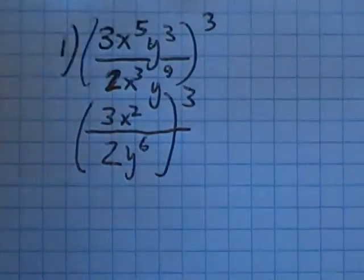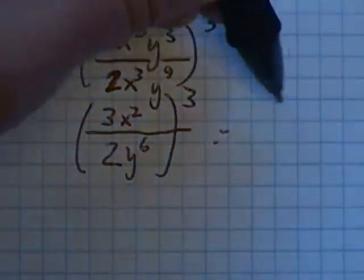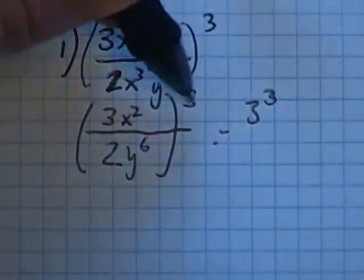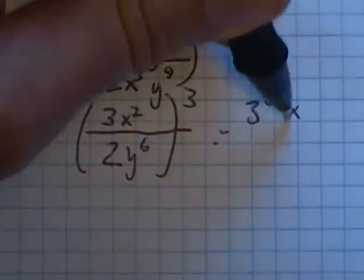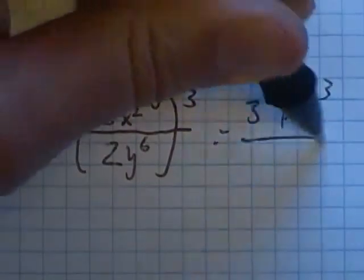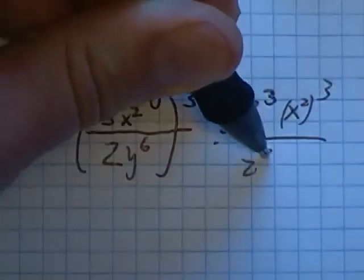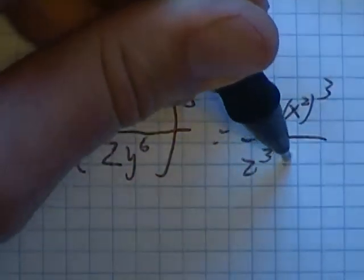And then from here, everything in here is going to be cubed. So essentially the 3 is being, not essentially, actually the 3 is being cubed. The x squared is being cubed. The 2 is being cubed. And the y to the 6th is being cubed.